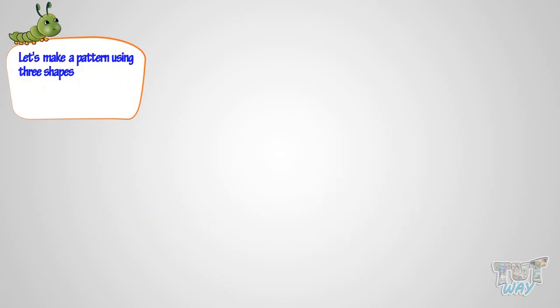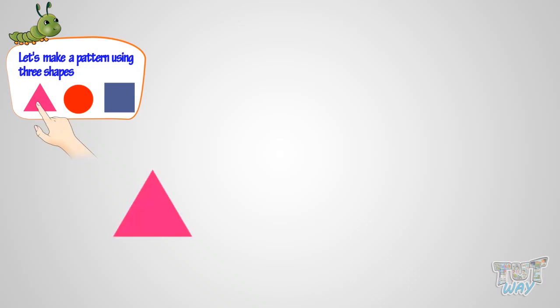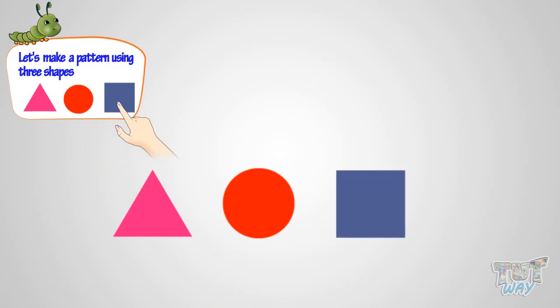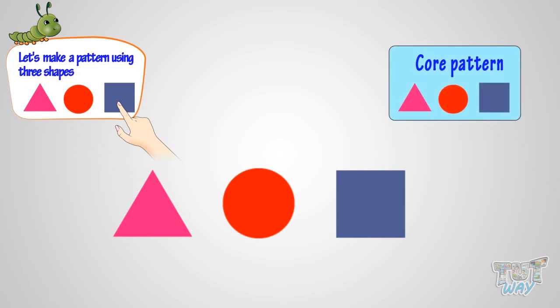Now let's make another pattern. We will use three shapes here — a triangle, a circle, and a square. Now let's make a pattern. First use triangle, then a circle, then a square. Is it looking nice? So this will be our core pattern.